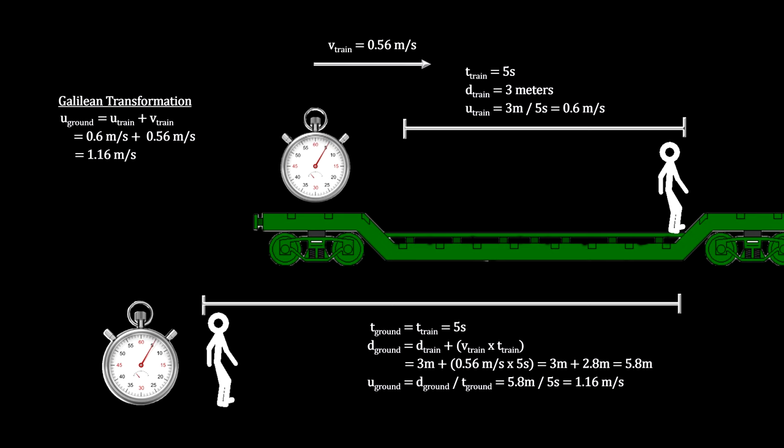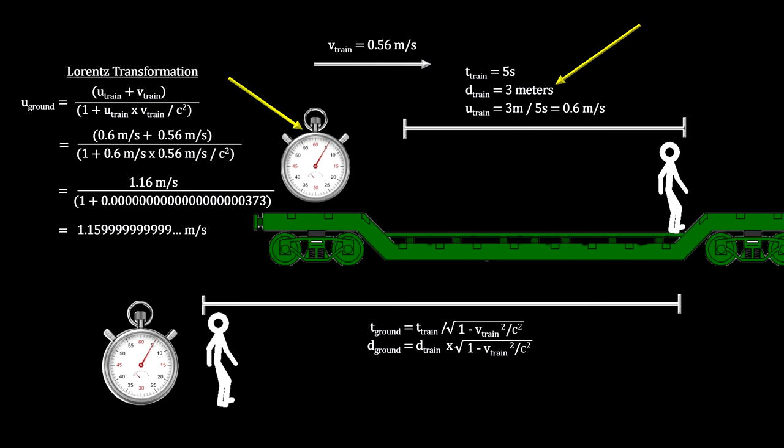In special relativity, the clock on the train is running a bit slower and the distance the person walked is a little bit shorter as seen by the observer on the ground. So this calculation of the total velocity is a bit less than the Galilean calculation.